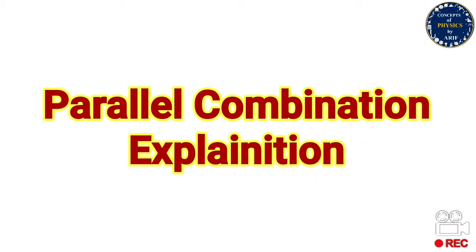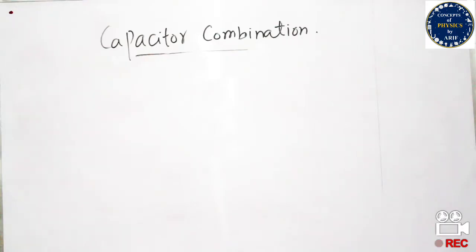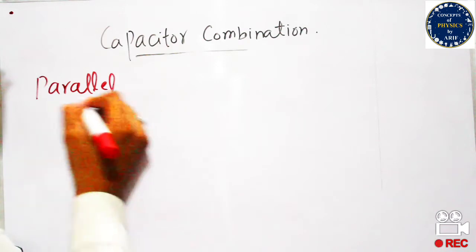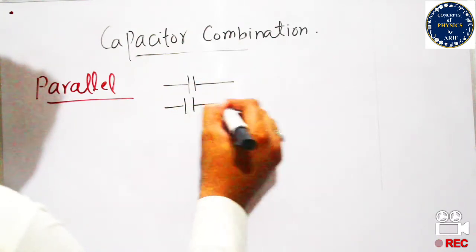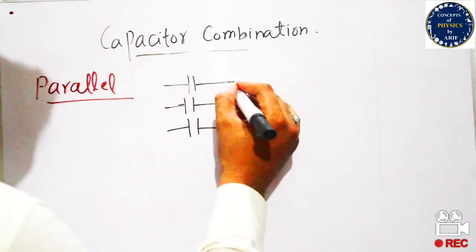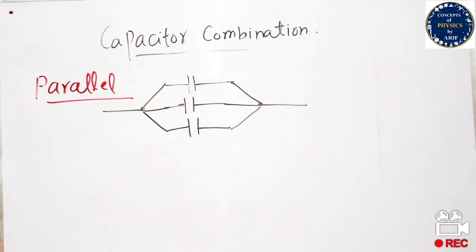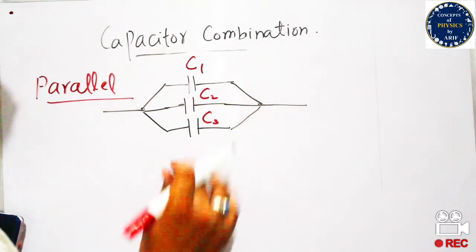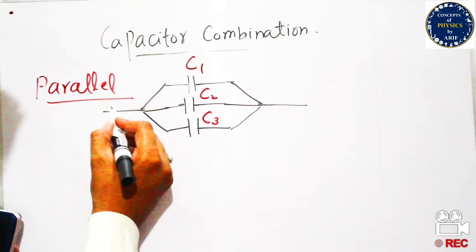Now let us explain the parallel combination of capacitors — how these capacitors are connected in parallel and how we can calculate the equivalent capacitance. In parallel combination, one capacitor is placed above or below the other. All the right-side terminals are connected to one terminal, and all the left-side terminals are connected to the other terminal. These capacitors are also connected with a voltage source and switch.